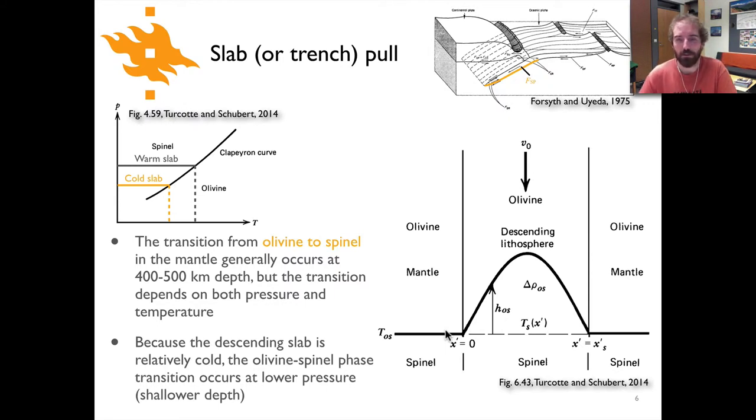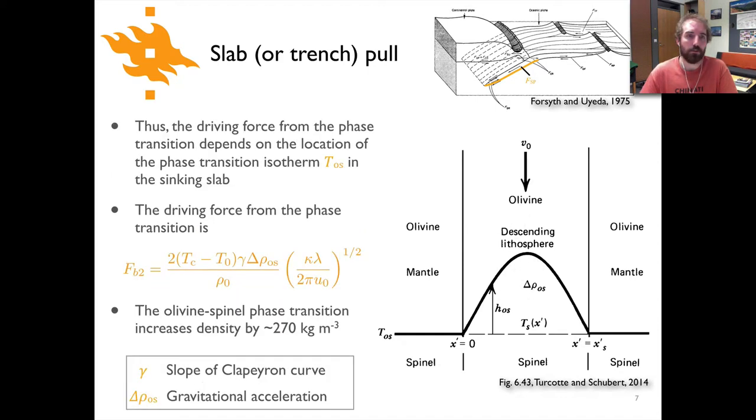The line here, TOS, is the temperature of the olivine to spinel phase transition. We can see that that temperature changes because the subducting slab is relatively cold compared to the surrounding mantle material, and so that phase transition actually takes place at a relatively shallow depth. Because you transition from a less dense phase to a more dense phase, that can drive the slab pull force.